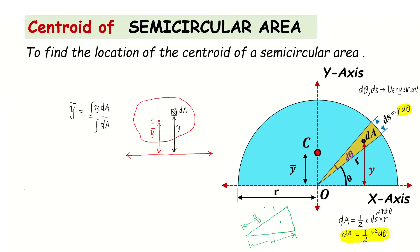Applying this to our sector or triangle: the distance of the centroid from the origin O is (2/3) times the height, which is r. So the centroid of the sector is at (2/3)r from the origin, and at (1/3)r from the base. This distance from origin to the centroid point is 2r/3.